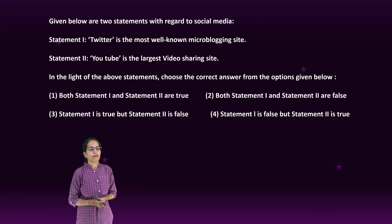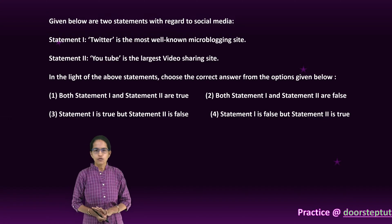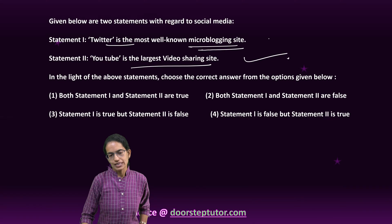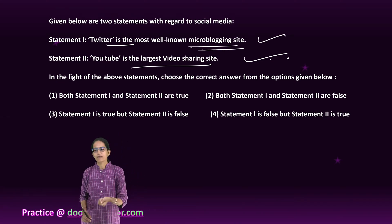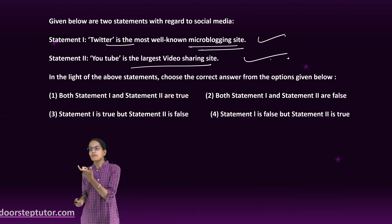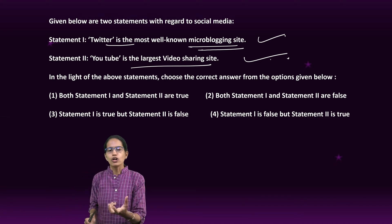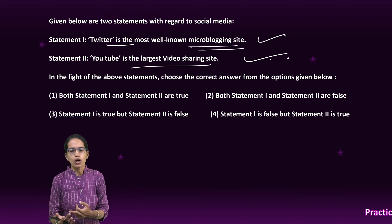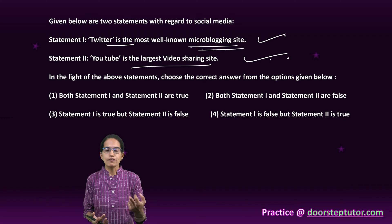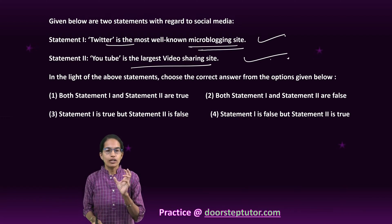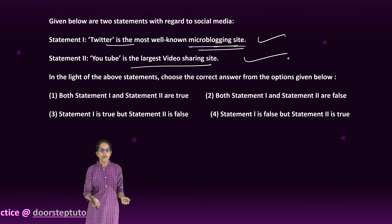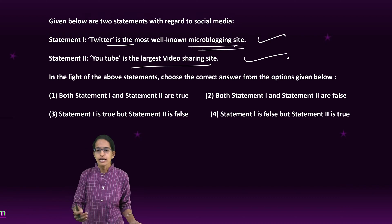The next question talks about two statements. YouTube is the largest video sharing site — that is correct. Twitter is the most well-known micro-blogging site — that is again correct. Micro means small, so micro-blogging refers to small, quick posts for short audience retention. When it comes to content-based or image-based content, Twitter is one of the most common micro-blogging sites where a person can post throughout the day about what is happening on the go.